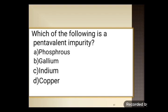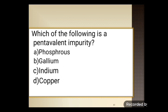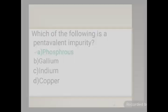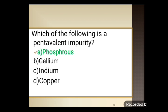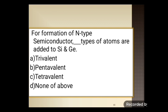Next question: which of the following is a pentavalent impurity? Options include phosphorus, gallium, indium, and copper. Pentavalent means valency of 5. The correct answer is option A: phosphorus, which is a pentavalent impurity. For the formation of N-type semiconductor, pentavalent types of atoms are added to silicon and germanium. Option B, pentavalent, is the correct answer.